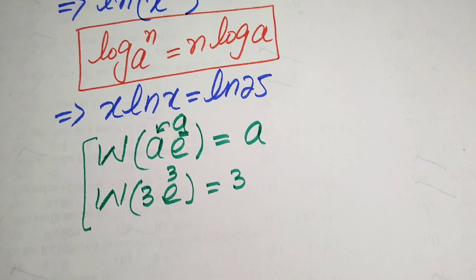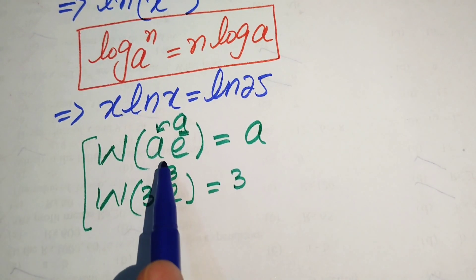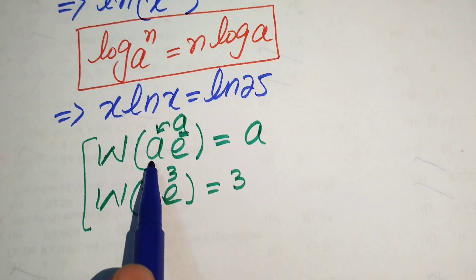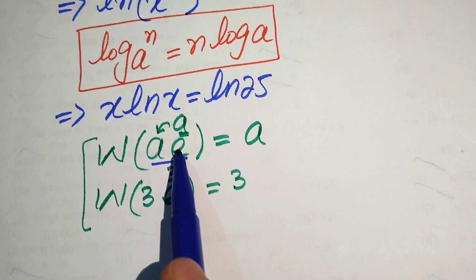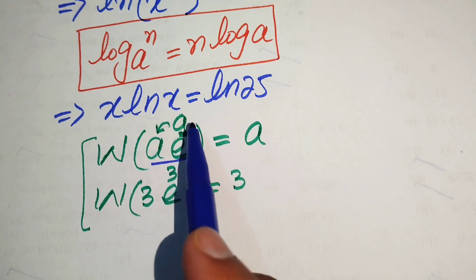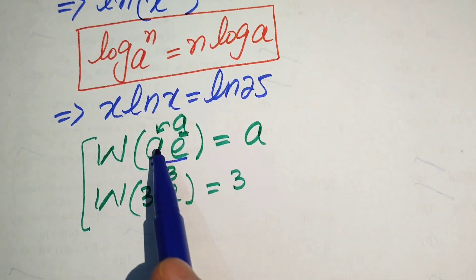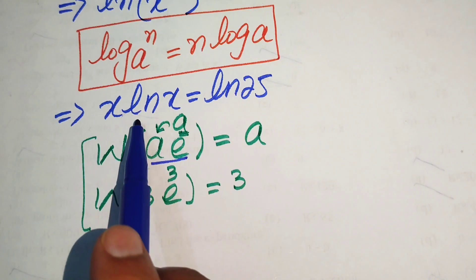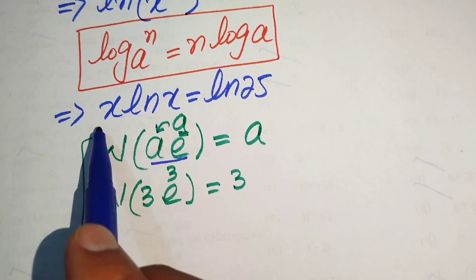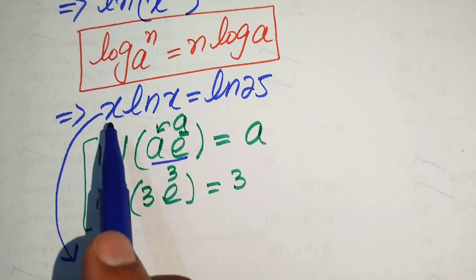To use the Lambert W function, we first need to rewrite our equation in the required form — specifically, as an exponential function with base e, where the exponent of e is multiplied by the same term. We rewrite the left-hand side accordingly.